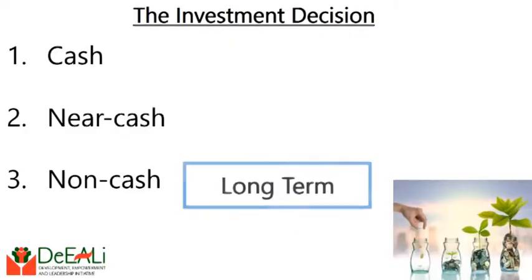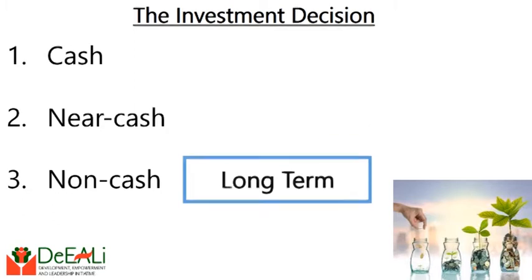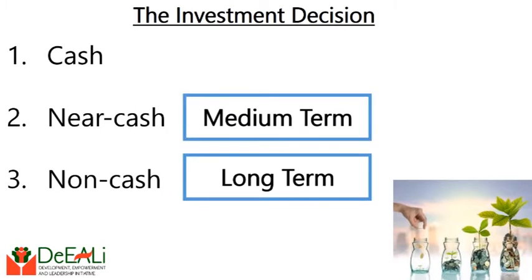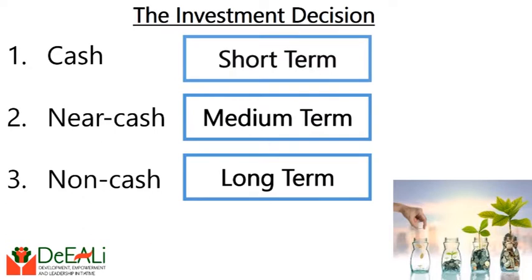You should have those that are long-term, which are usually the non-cash. You should have those that are medium-term, which are the near cash. And you have those that are short-term, which are the cash. Whether these investments are in real estate, they are in shares, they are in certain organizations, they are in businesses that you are trying to run — whichever vehicle you decide to adopt for your investments, always remember that the mix of the three is optimal for you when you are thinking of creating assets.